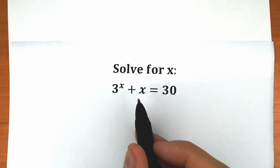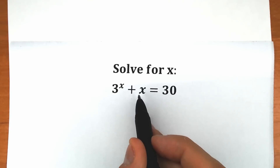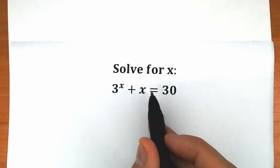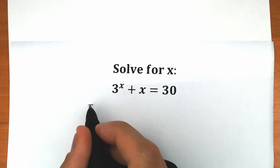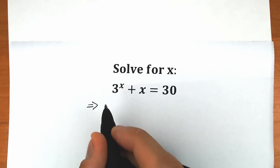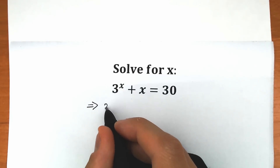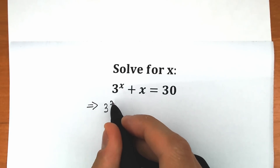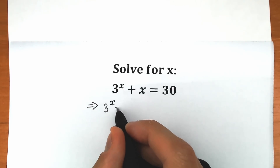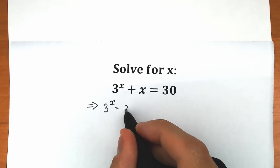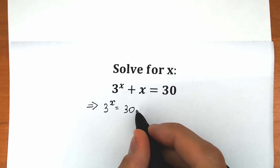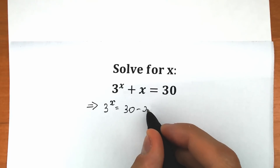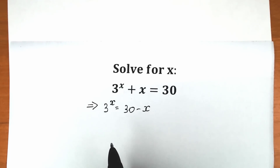First of all, let's bring this x from our left side to the right side. So we have 3 to the power x equal to 30 minus x. This is our first step.